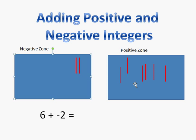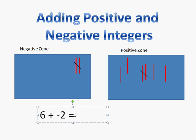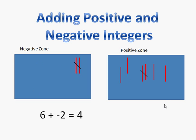Since I have numbers in both zones, I need to cross out the matching numbers because they equal zero. So I'm crossing out two of my numbers in my negative zone, and since I've crossed out two in the negative zone, I have to cross out two in the positive zone as well. Now, when I cross out my matching numbers, I still have four numbers left in my positive zone. That's how I know my answer is going to be positive. So six plus a negative two equals positive four. I put numbers into both zones, crossed out the matching ones, and had four left over in the positive zone.